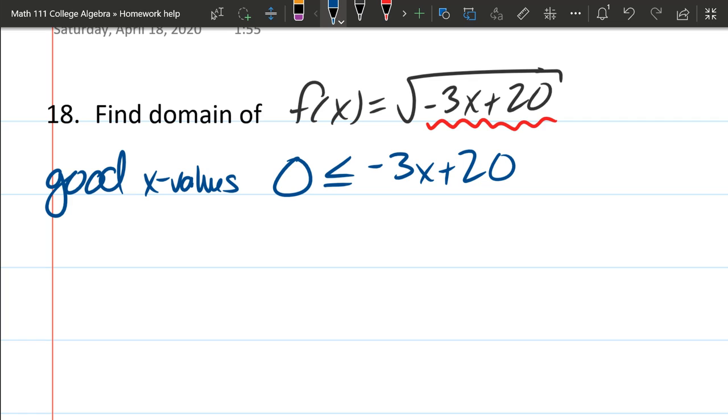Now we're gonna solve for x. X has again two friends. So who goes first? We're gonna get rid of the plus 20 first. How do we un-add 20? You subtract 20. So we're subtracting 20. Now, adding or subtracting never flips your inequality, even when you're adding a negative or subtracting. So we got negative 20 less than or equal to negative three x.